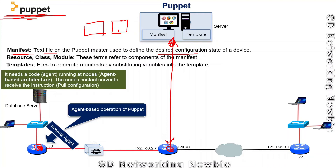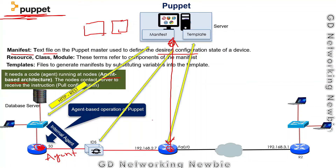In one flavor of Puppet, some code or agent needs to be installed on the nodes — this is called agent-based architecture. The nodes then use HTTP and REST API to pull the instructions from the Puppet server.